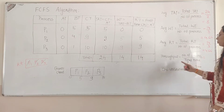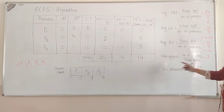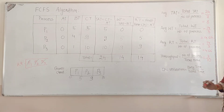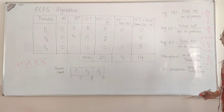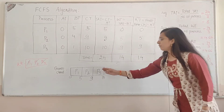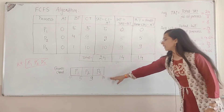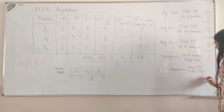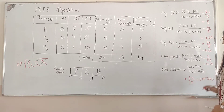Throughput is the number of processes divided by total time = 3 divided by 10 = 0.3. CPU utilization formula is busy time divided by total time. The CPU was busy for 10 units and total time is 10, so 10 divided by 10 = 1. Multiplying by 100, CPU utilization is 100%.